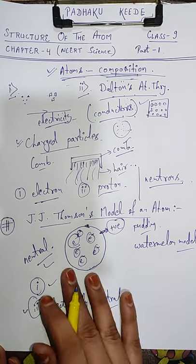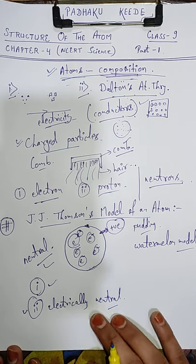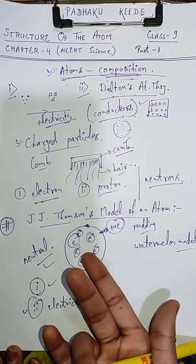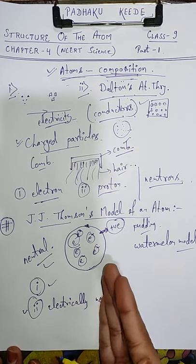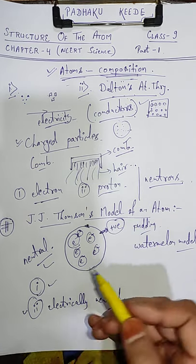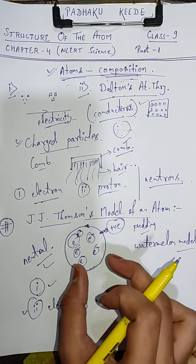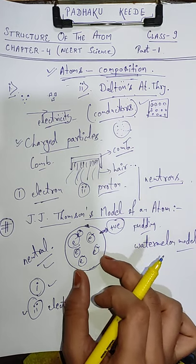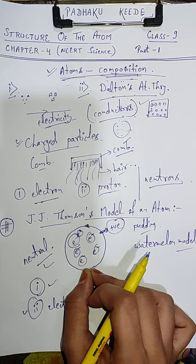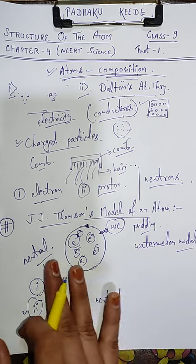Yeh do cheezein toh isne explain kar di, lekin iske drawbacks yeh rahe ki jo further scientists aaye aur unhone alag-alag discoveries kiin, usko yeh model satisfy nahi karta tha. Aur woh kaunse scientists aaye aur unhone phir apne kya modifications kiye ek atom ke structure ko lekar, woh aaghe dekhte hain. This is not the final and accurate model of an atom — yeh un scientists ke hisaab se sahi tha, lekin aaj ke kisi ek atom ko uthayenge to uska structure alag hai.